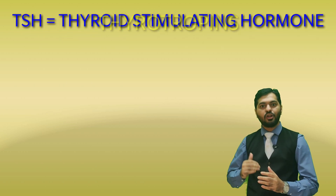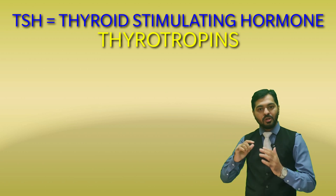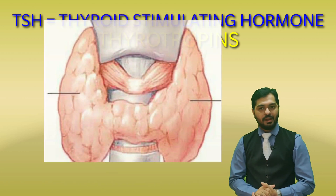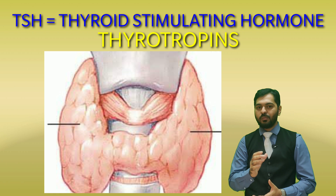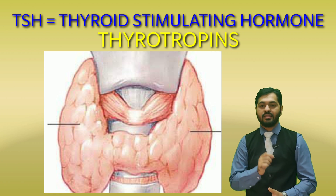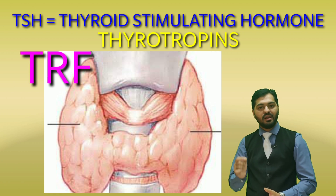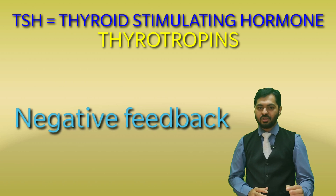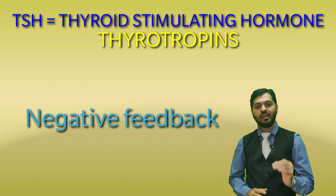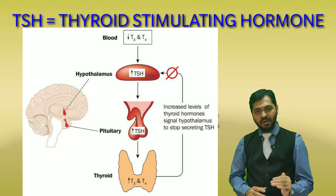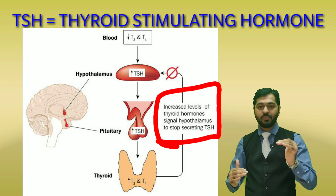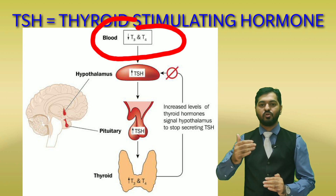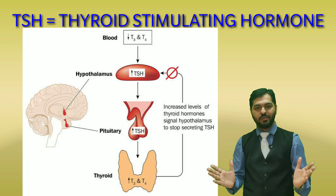The next anterior pituitary hormone is TSH, also known as Thyrotropin. From the name itself it is obvious that it controls the thyroid gland. TSH is mainly controlled by the hypothalamic hormone TRF — Thyrotropin Releasing Factor. TSH is also controlled by a negative feedback mechanism based on thyroxine levels in the blood: if thyroxine levels are very high, TSH is inhibited; if thyroxine levels are low, TSH is stimulated and there is more secretion.